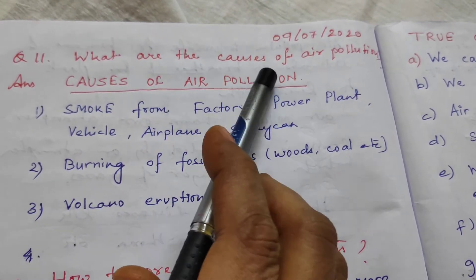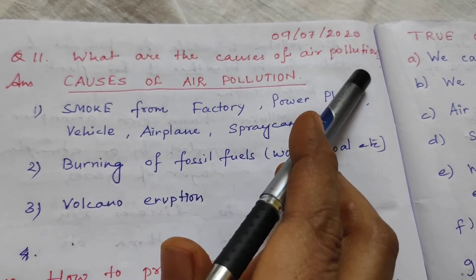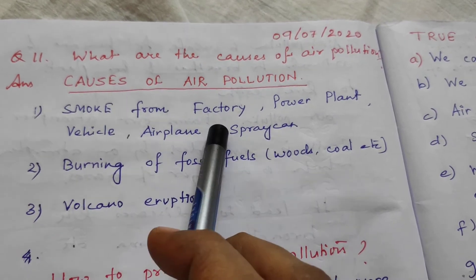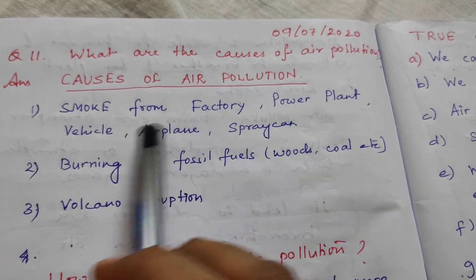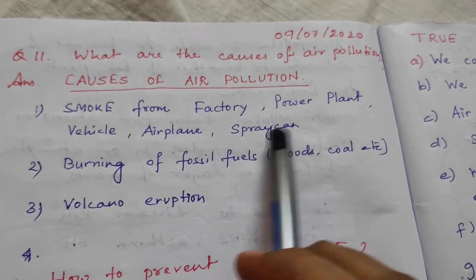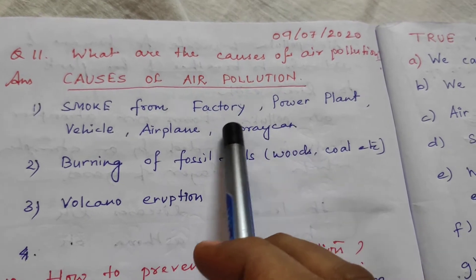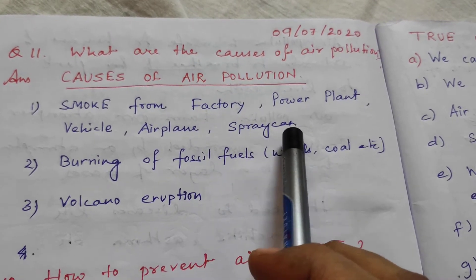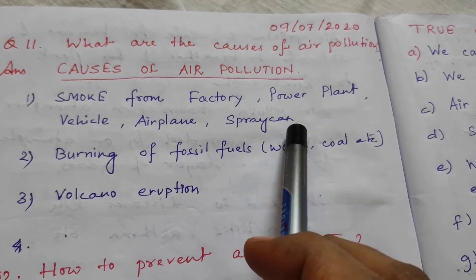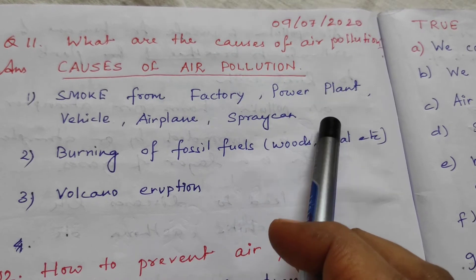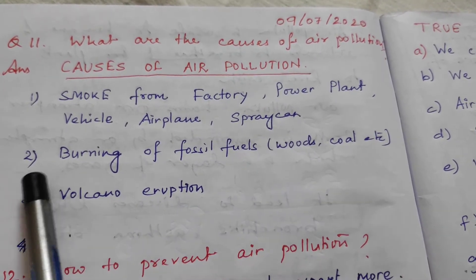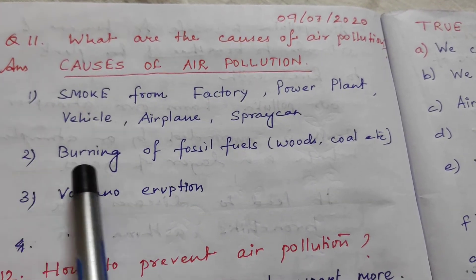What are the causes of air pollution? Number 1: smoke from factory, power plant, vehicle, airplane, spray can. Here spray can means the spray we use on our body and the spray we use in our house. So this is spray can.